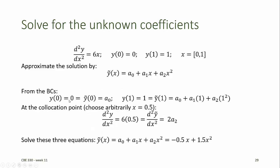At x equals 0, y at 0 is 0, which means our approximating function should also be equal to 0. If we substitute x equals 0 into the equation, we find that a0 must be equal to 0. Next we do the same thing at the other boundary: we set y-tilde at 1 equal to 1 to satisfy the second boundary condition. Finally, we choose a collocation point — here we'll arbitrarily choose the center of the domain. At the center of the domain, we impose the constraint that the defining equation must be satisfied: d²y/dx² has to equal 6x, and that should equal d²y-tilde/dx², which is equal to 2a2. We can use this third equation to find the value for a2, and then use our second constraining equation at the second boundary condition to find the value for a1.